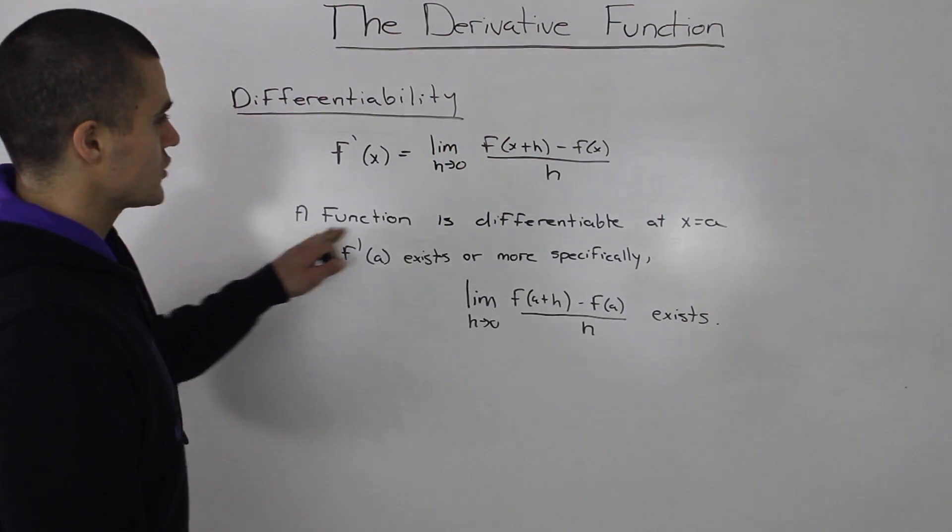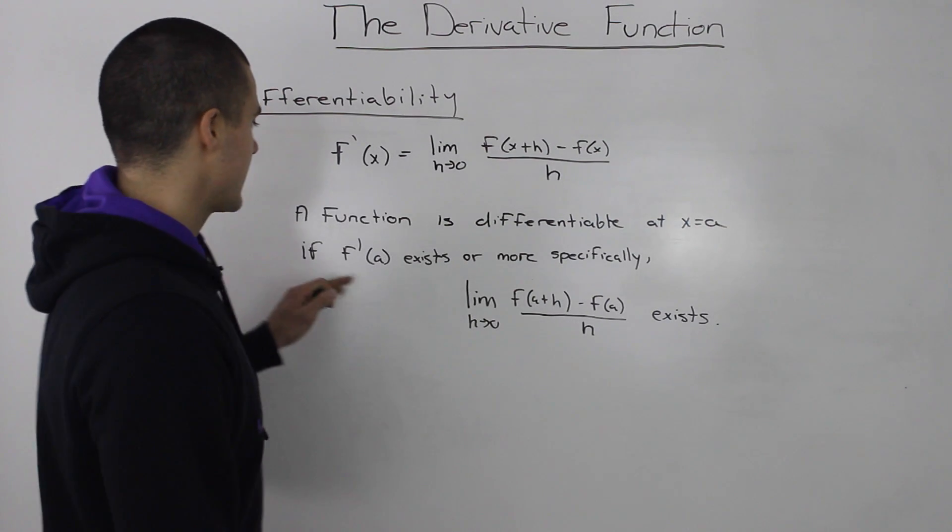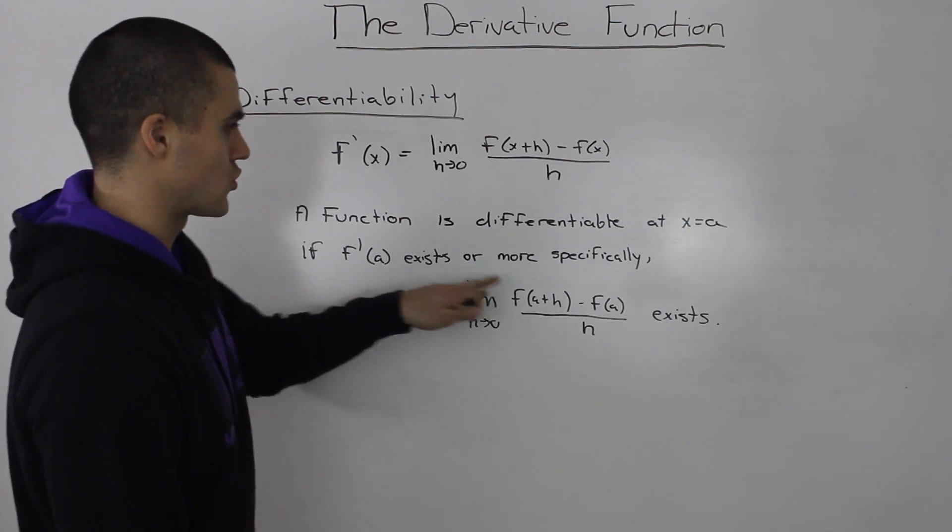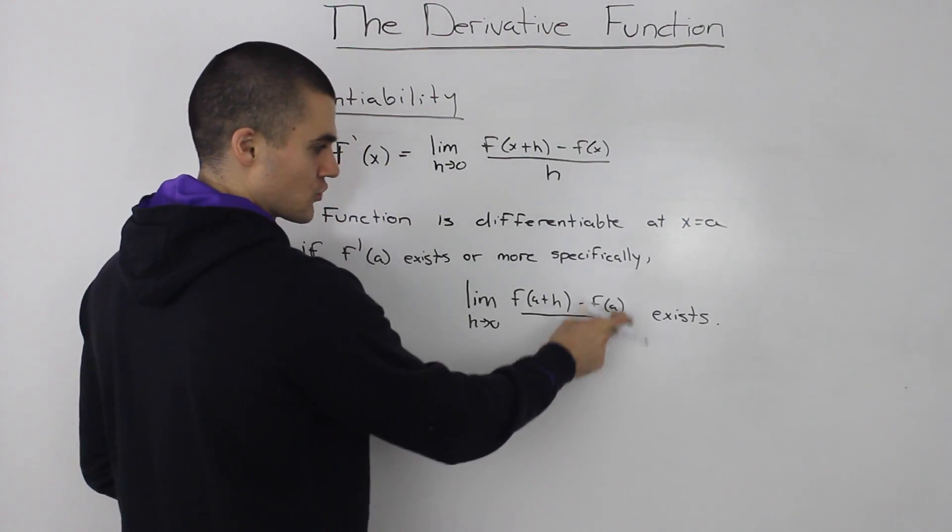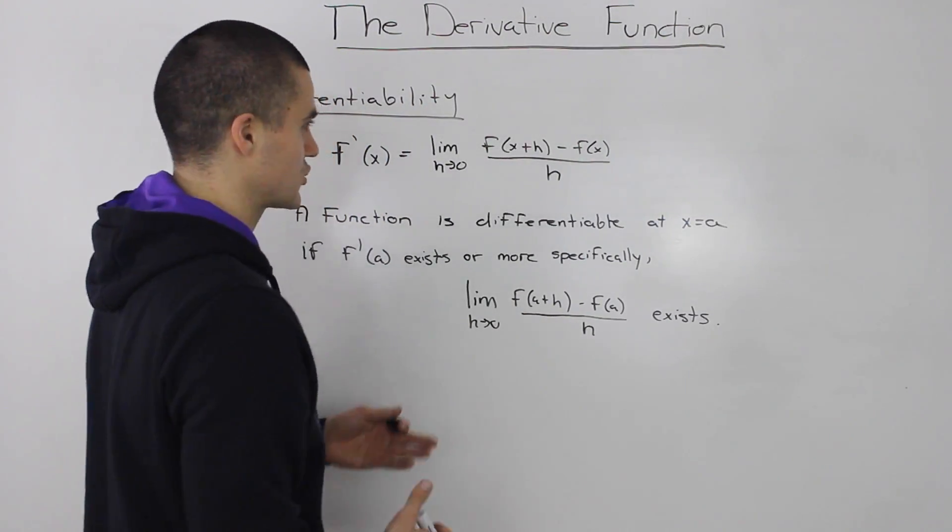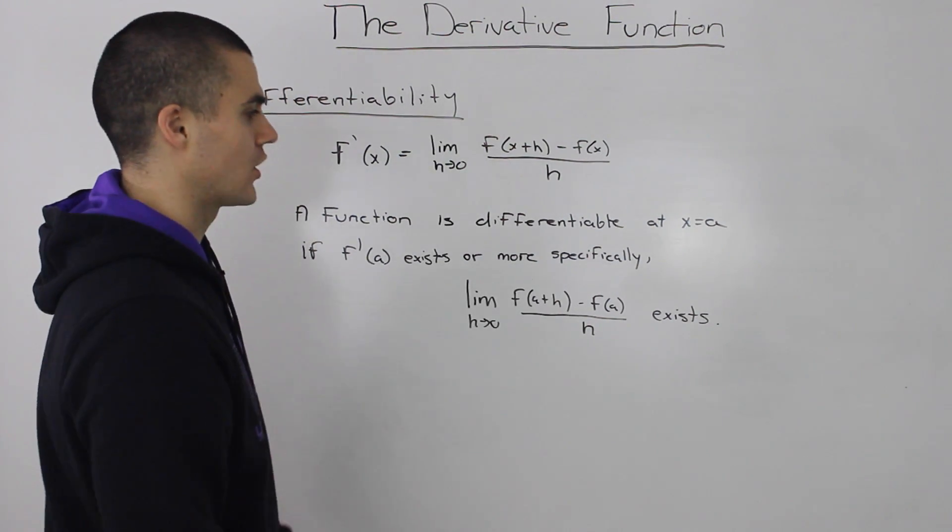All right, so a function is differentiable at x equals a if f'(a) exists, or more specifically, if the limit exists. So this is the most raw way to tell if a function is differentiable at a certain point or not.